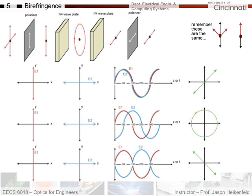If you go through another quarter wave plate after the first, it shifts the phase by another 90 degrees — a quarter plus a quarter equals a half wave plate, giving a full 180-degree shift. The resultant returns to linear polarization, but rotated 90 degrees compared to the original. With a polarizer aligned to this new orientation at the end, the light passes through, whereas without the wave plates, no light would get through.